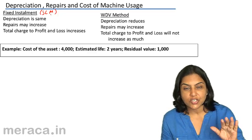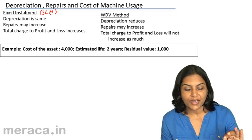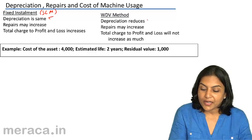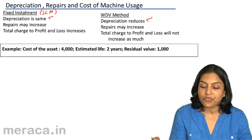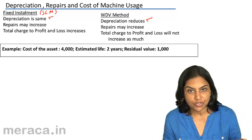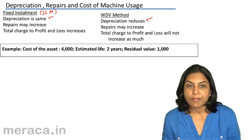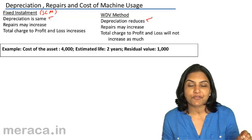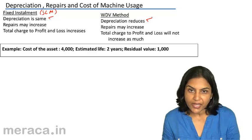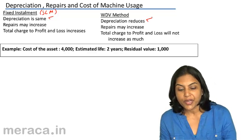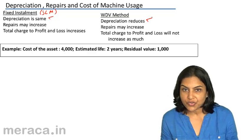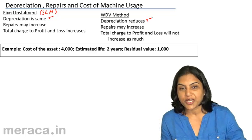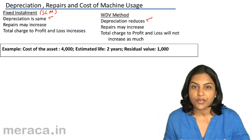Under the fixed installment or straight line method, depreciation is the same. But under the written down value method, the depreciation reduces, because depreciation is computed as a fixed rate on the written down value — a fixed rate on a reducing balance — since the written down value of the asset goes on reducing.